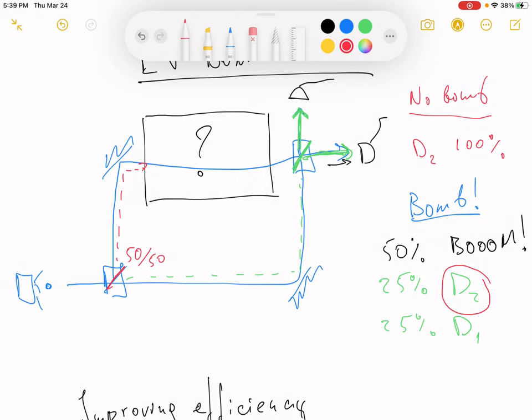What we could do is recycle the photon when it goes into detector 2. Yes, instead of getting it out of detector 2, we could let it go through the loop once again.